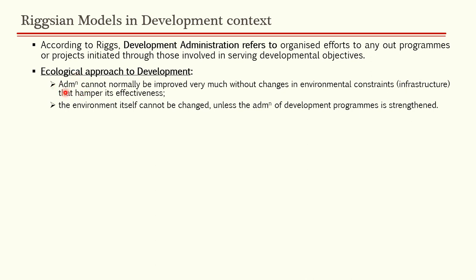In the bi-directional sense: first, administration can be improved only if you remove the constraints in the environment. Second, the environment cannot be changed without development programs of administration. So administration and environment are mutually dependent — this is the ecological approach to development.